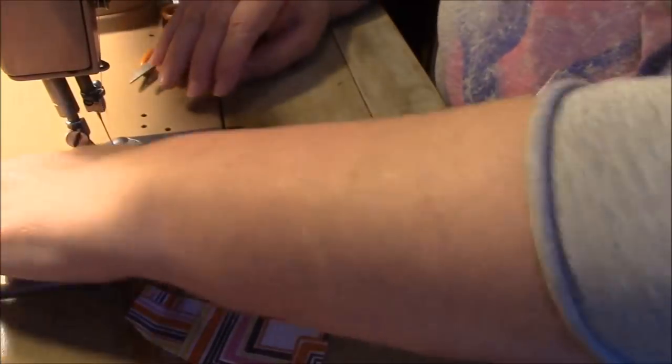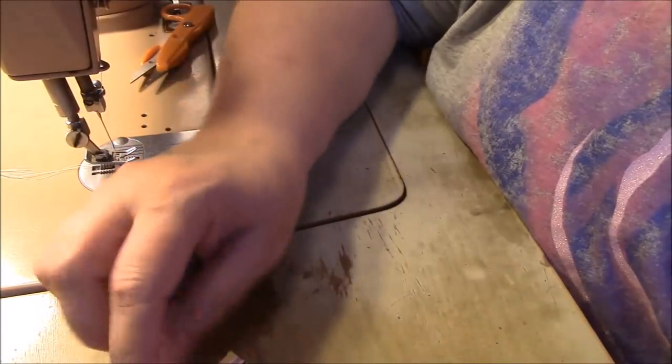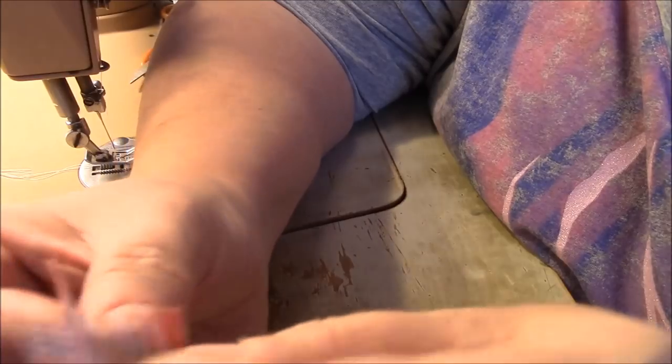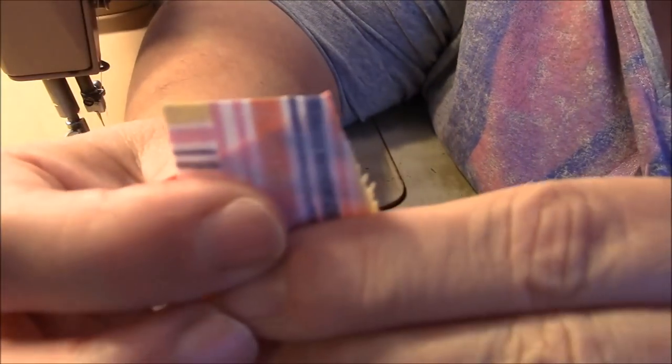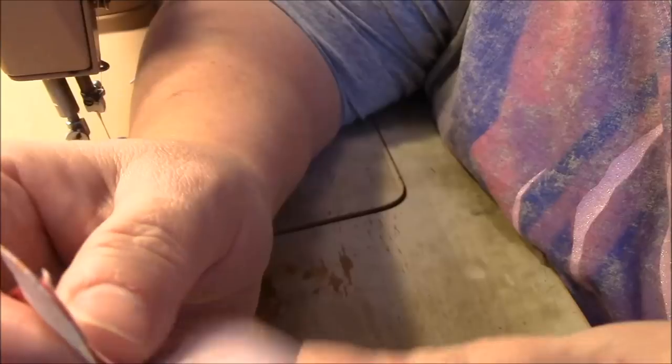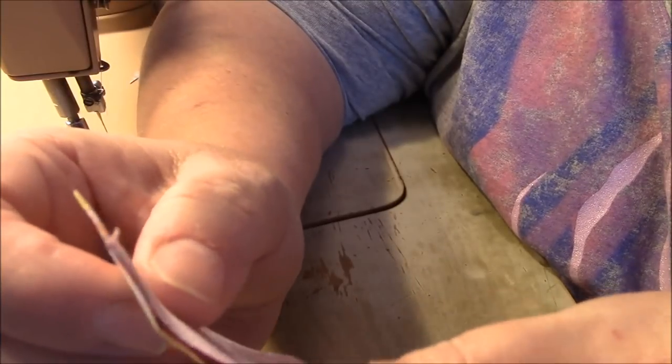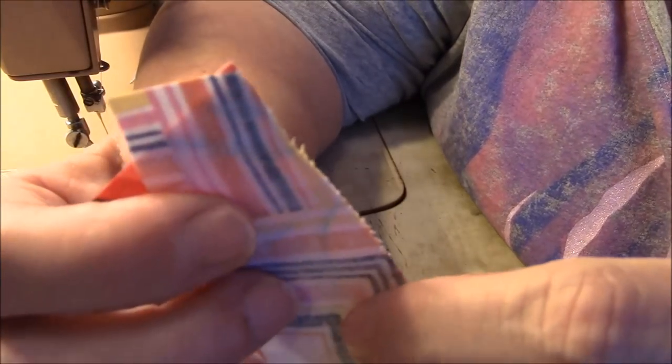This one actually came out pretty good on the bottom. But what you can do, and especially if there's more of an angle, when you put your pieces together, instead of lining up, it's hard to explain. Just see if I can show you here. Instead of matching up the points right here, you can slide the fabric up or down depending on the angle and which way you sew.